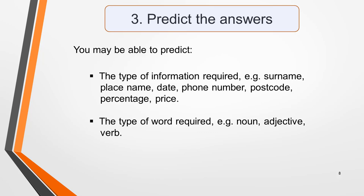Another important task to do in your preparation time is to try to predict what the answers might be. This will focus your mind on what to listen out for in the recording. Occasionally you'll be able to predict the actual word, but mostly you'll be able to determine the type of information required — for example a surname, place name, date, phone number, postcode, percentage or price — or the type of word required, such as a noun, adjective or verb. Any clues you can get will help you to understand the audio and identify the information needed for the answers.